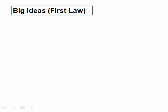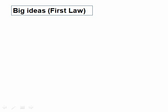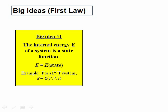Our previous lecture on the first law of thermodynamics was based on two big ideas. The first one is that the internal energy of a system is a state function — a function of its present state. For a PVT system, the energy is a function of pressure, volume, and temperature. The second big idea is that energy is conserved: the change in energy of a system is the heat input minus the work output. The internal energy can only change if the system exchanges energy with its surroundings.